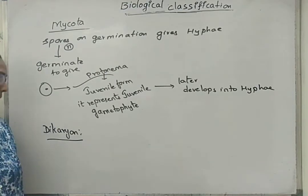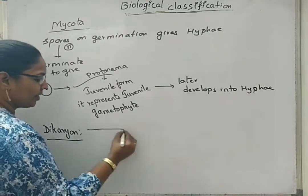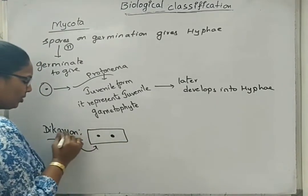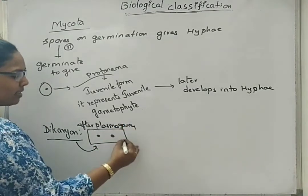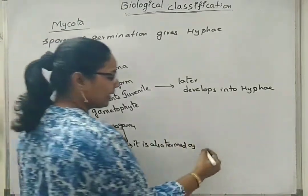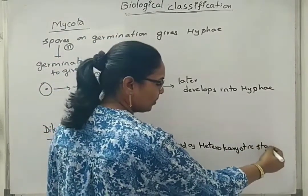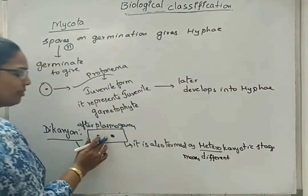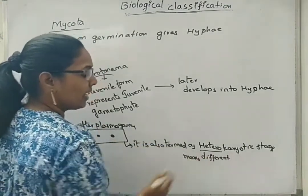During sexual reproduction, when two different chambers of two different hyphae are fused, they form the dikaryotic stage. If this is the dikaryotic stage with two nuclei, it means karyogamy did not happen — just plasmogamy. So dikaryotic is after plasmogamy. At this stage, it is also termed as the heterokaryotic stage. Hetero means different — different nuclei from different hyphae chambers come into one single cell with two nuclei, so called dikaryotic and also heterokaryotic stage.